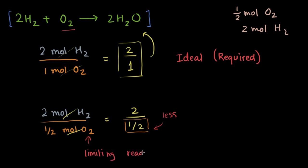What we did here is compare the ideal mole ratio — the amount of reactant 1 reacting with the amount of reactant 2 — to the actual given amounts of the reactants. If something is less than required, then it is the limiting reagent.